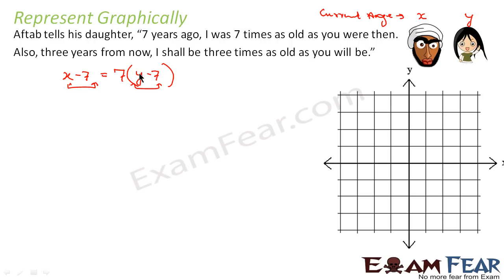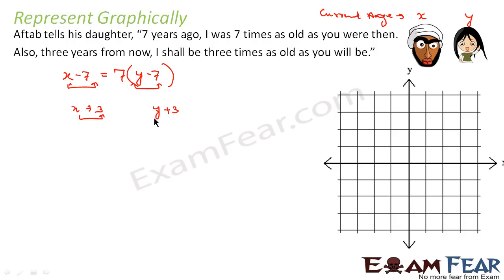Aftab tells that seven years ago he was seven times as old as his daughter. So that means x minus 7 is going to be 7 into (y minus 7). That is my first equation. Similarly, he also tells that three years from now, Aftab's age will be x plus 3 and his daughter's age will be y plus 3.